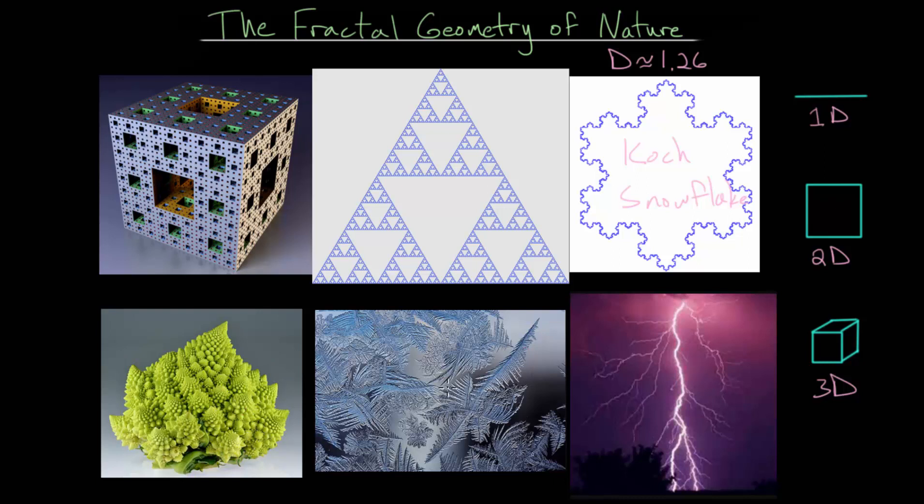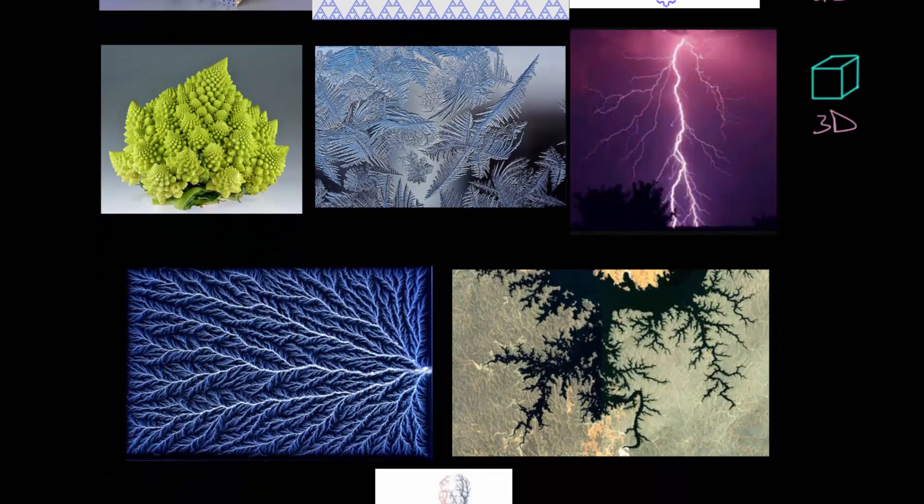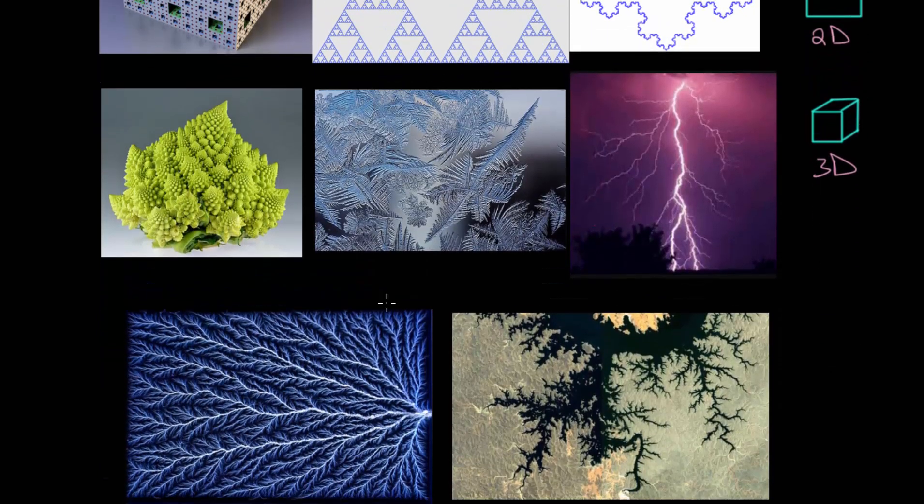And over here, we have two examples of what we might call branching fractals or fractal trees, since this is frost that can form on glass. And this is lightning. And that pattern in nature of these fractal trees will show up in various different applications.